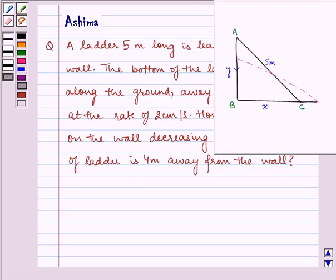Now let us see the figure for this question. Let AC be the ladder and B be the junction of the wall and ground. AB is the wall and BC is the ground. AC is given to us as 5 meters, that is the length of the ladder. Let BC equal x and AB equal y meters.